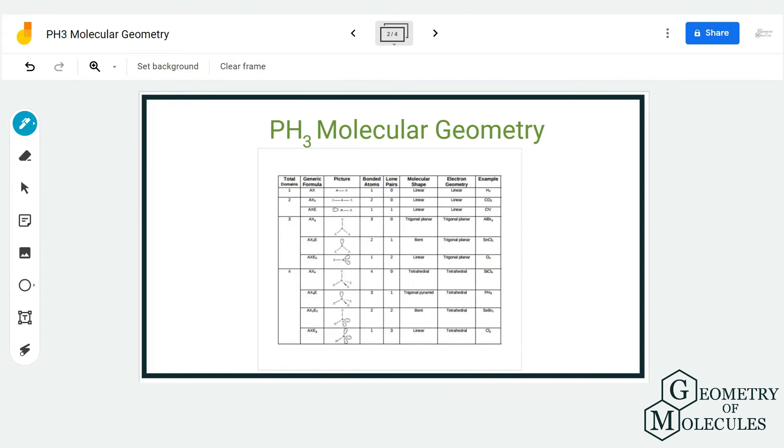Now referring to this table which helps us to find out the molecular geometry, if we know the steric number we can actually see what the molecular geometry for PH3 might be. As there are four electron regions or the steric number is four, out of which one is a lone pair, it will have a trigonal pyramidal molecular geometry.